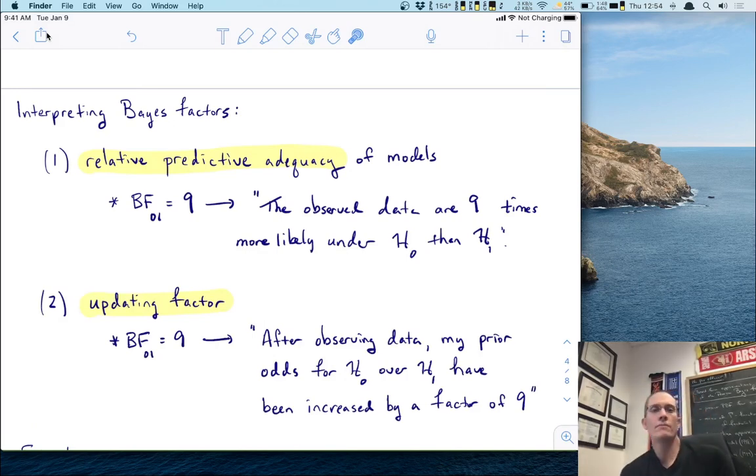We can also view the Bayes factor as an updating factor. And it's kind of cool. This is how this works. So let's suppose again that we have BF01 equals nine. The way you would interpret the Bayes factor as an updating factor is this. You would say, after observing data, my prior odds for h0 over h1 have been increased by a factor of nine. Now, why would that be helpful? Well, here's why it's helpful. Let's just take an example where we can visualize this notion of prior odds.